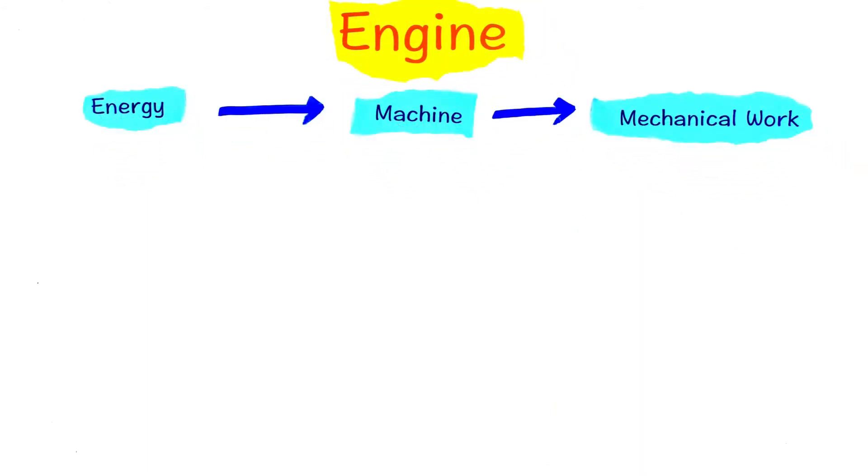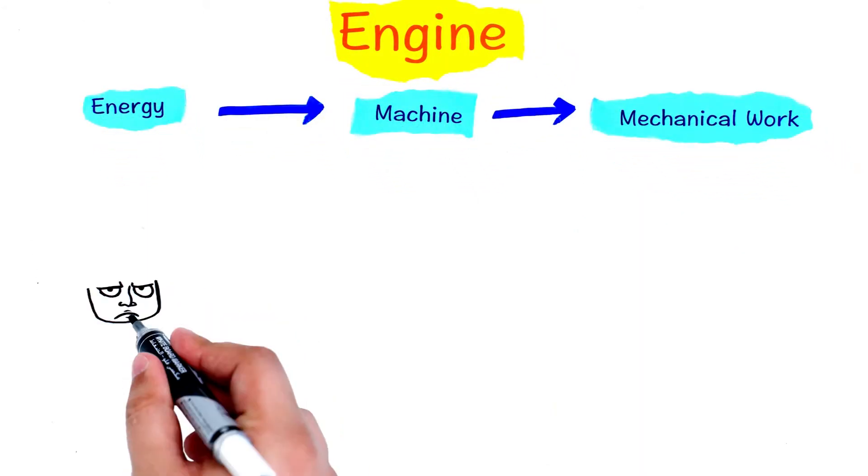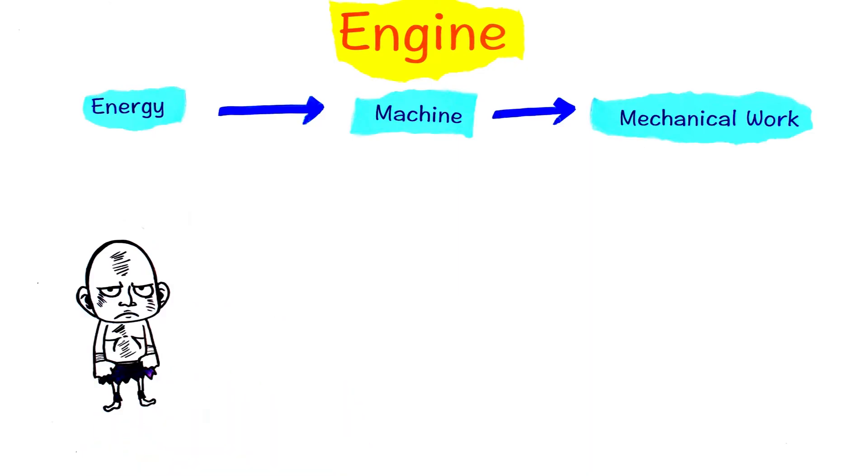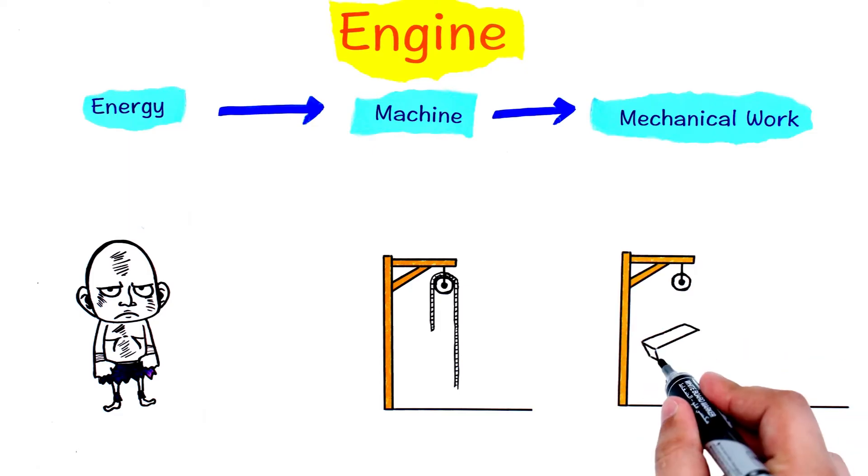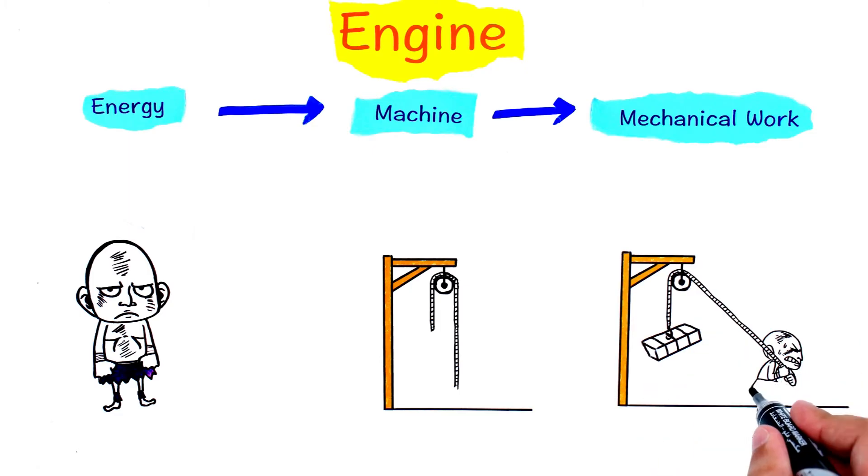In this definition we have a machine, energy that goes into this machine, and the output which is mechanical work that we can use to do different tasks. In the ancient times, humans were used as a source of energy. The machine was usually a set of ropes and pulleys that are used to convert the human energy into mechanical work.